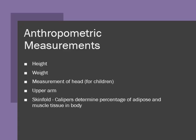When a registered dietitian first meets with a client, they will first want to take some measurements, known as anthropometric measurements. These can include taking the height of an individual, weighing the individual, and for children, a measurement of the head circumference. They also include measuring the circumference of the upper arm and calculating the skinfold using a caliper to determine the percentage of adipose tissue and muscle tissue present in the body.